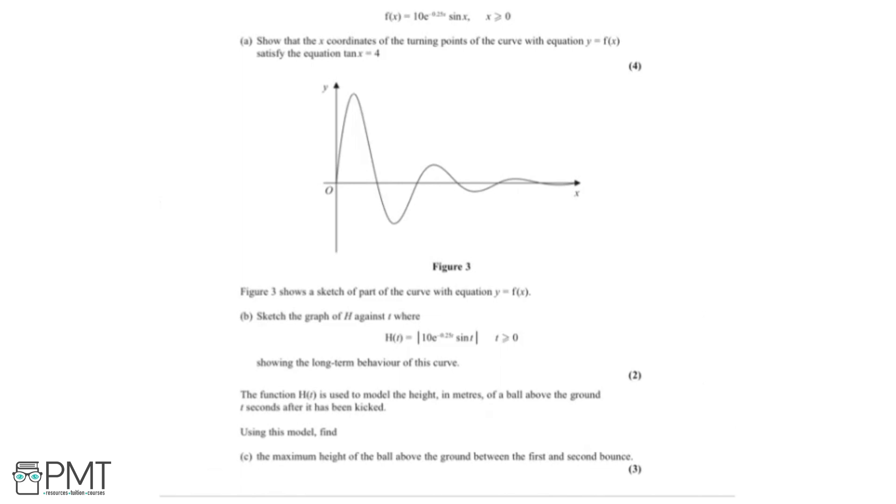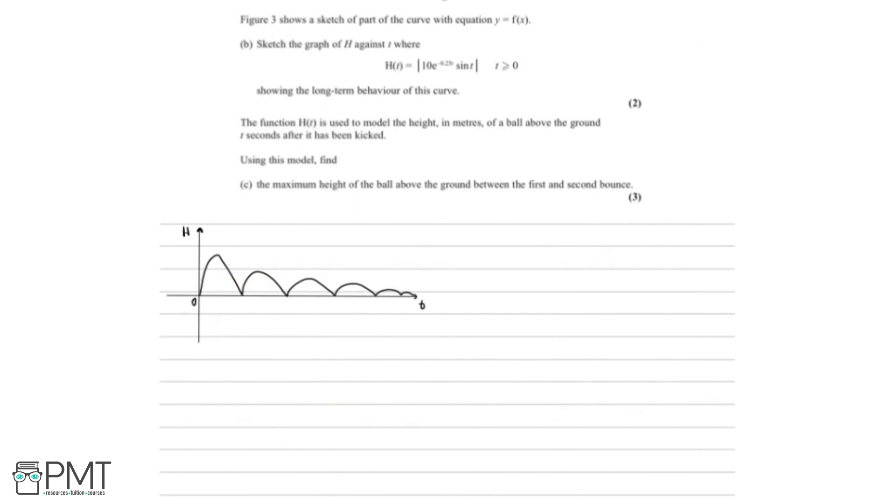So now I'll look at part c. It says the function h(t) is used to model the height in metres of a ball above ground t seconds after it has been kicked. Using this model, we need to find the maximum height of the ball above the ground between the first and second bounce. So here I've just got a smaller version of the graph that we drew in the previous part. This is the turning point we need to identify. Because right along here, at this point here, is the height of the ball above the ground between the first and second bounce.